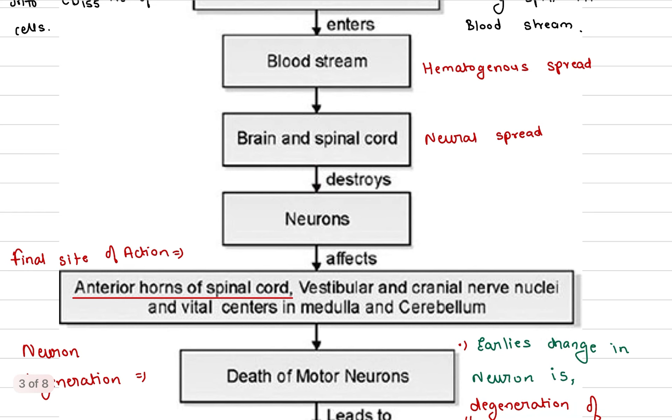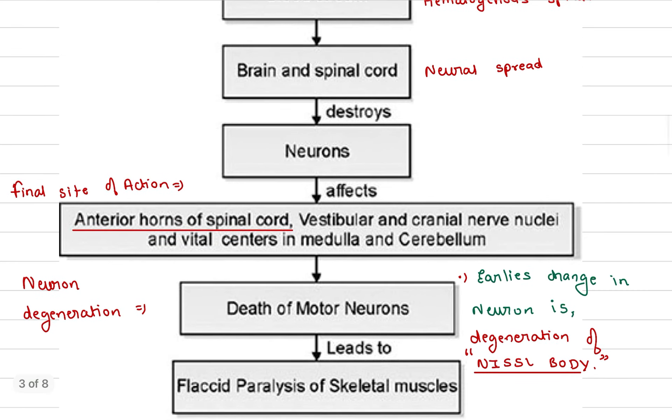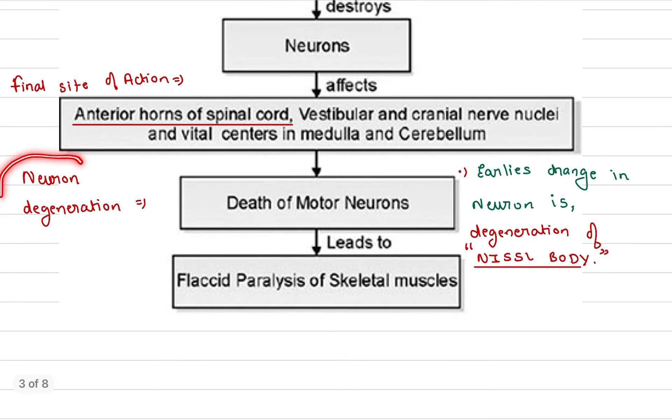After going into the bloodstream, it enters into the cell by binding to CD-155 receptor of cells. Hematogenous spread occurs. After this, it goes into brain and spinal cord showing neural spread, where it destroys the neurons which mainly affects the anterior horn of the spinal cord, which is the final site of action.